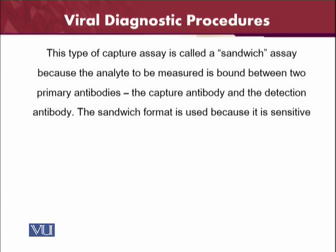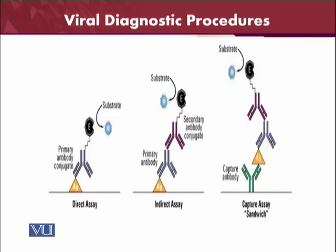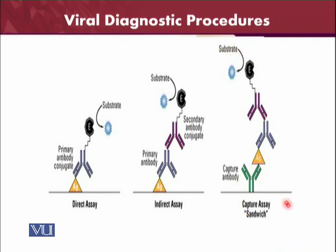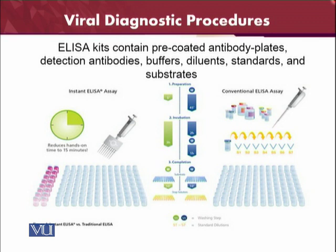In indirect ELISA, a primary antibody and a secondary antibody are used. In sandwich ELISA, there is a detection antibody and two primary antibodies, which is why it is called sandwich ELISA — the antigen is sandwiched between antibodies from both sides. It is a very sensitive technique. You can see the direct assay, indirect assay, and sandwich capture assay compared: in direct ELISA, the primary antibody conjugate reacts with the antigen and the substrate gives a readable result.